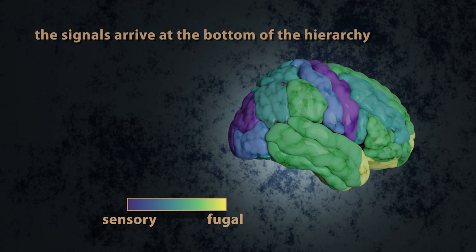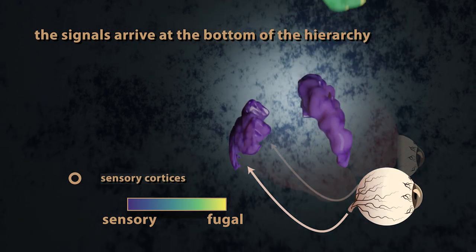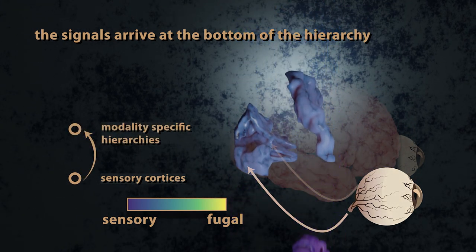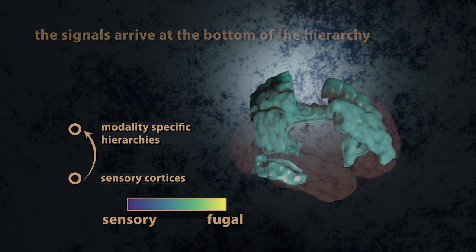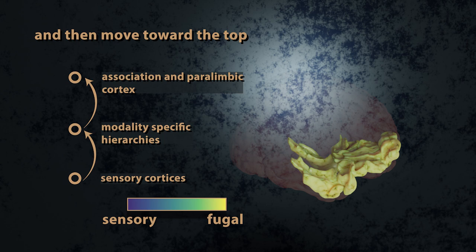Within this hierarchy, signals from our environment arrive first at sensory cortices. They are then propagated up to modality-specific systems before they finally arrive at association and paralimbic regions responsible for functional integration.